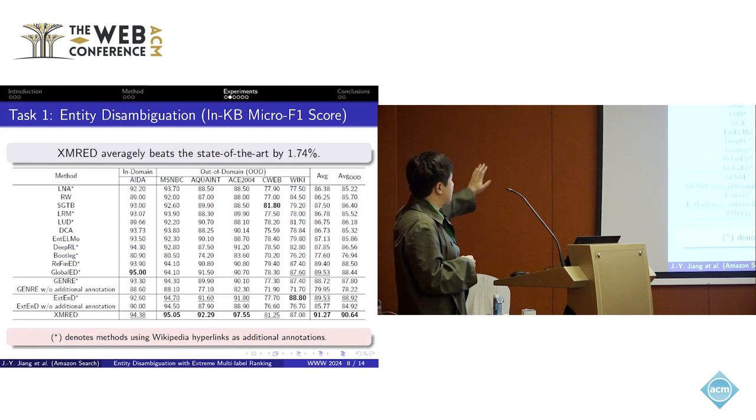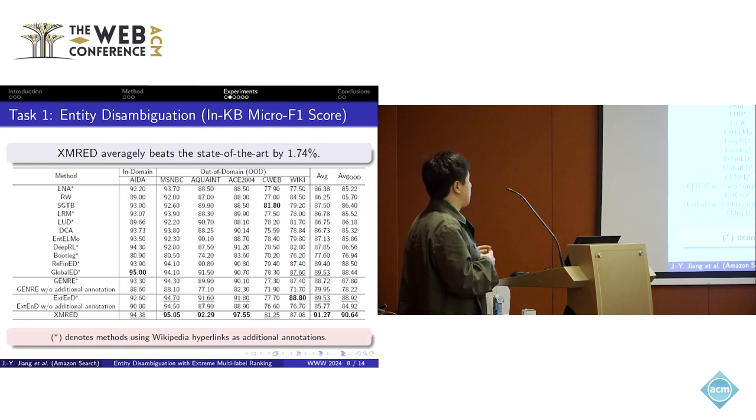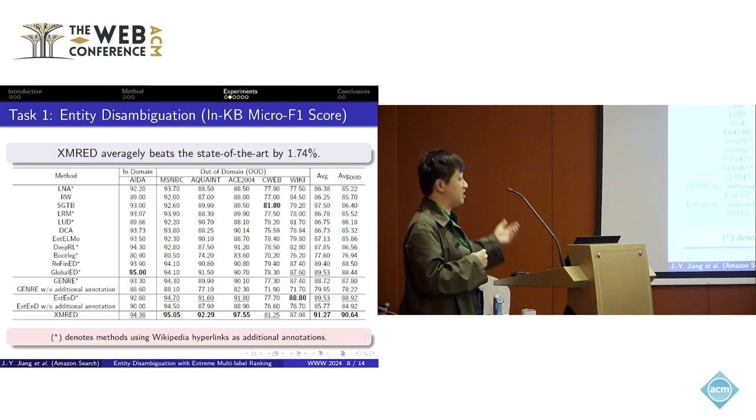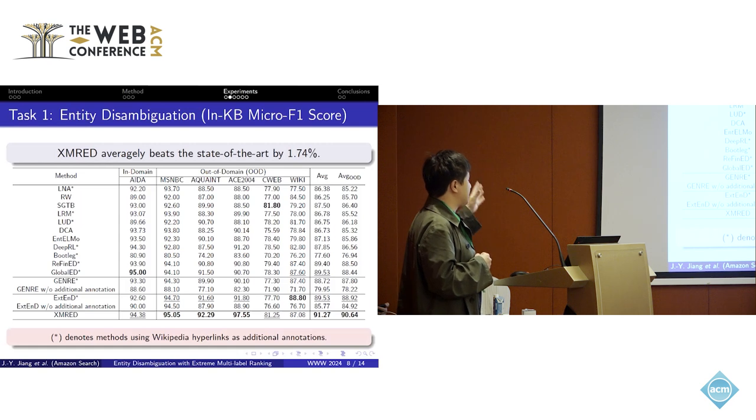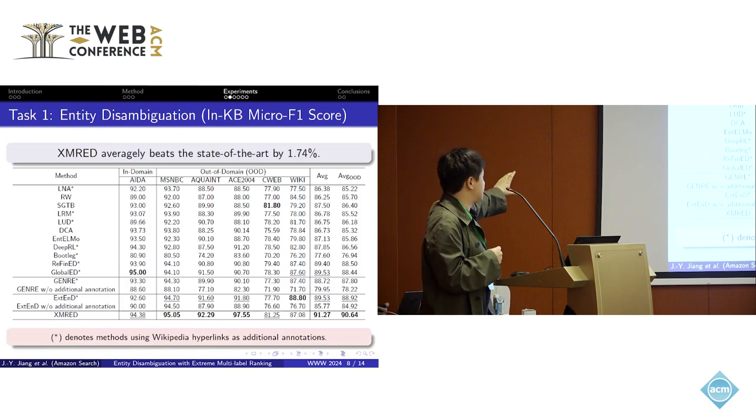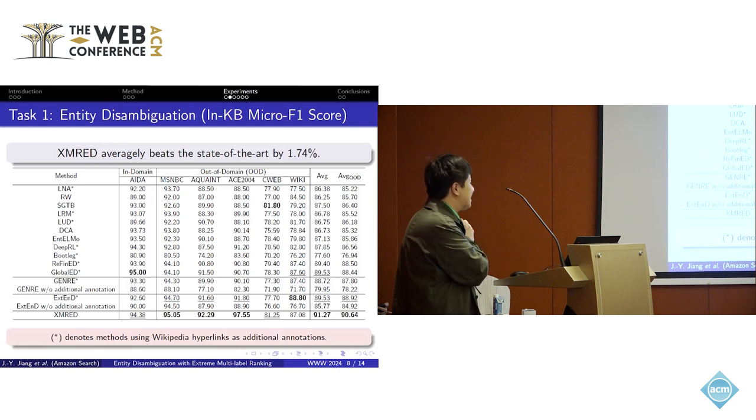For task one, we can see that on average, our framework can beat the state-of-the-art by 1.74%. We also noticed a very interesting phenomenon. Some of the previous studies used additional annotations from Wikipedia hyperlinks, but those hyperlinks could have some information leak of the ground truth. So we also conducted a study to remove those additional annotations to compare with the methods that have the same basis. For those baseline methods with the additional annotations, after removing those potentially leaked hyperlinks, performance significantly drops a lot. This means that for some previous studies, they may need to reconsider the comparisons in the experiments. But overall, we can see very significant improvement over the baseline methods.